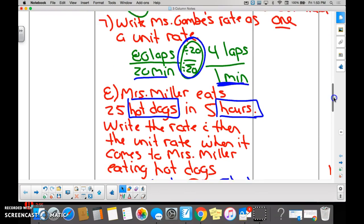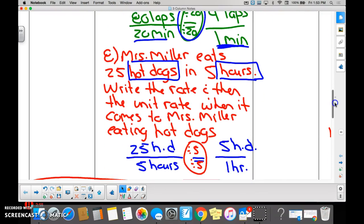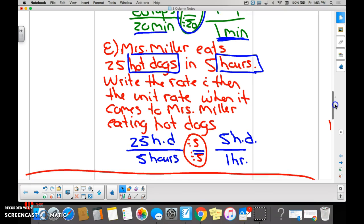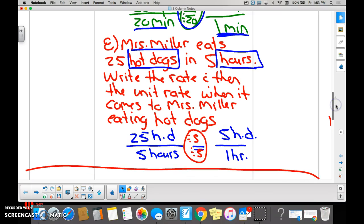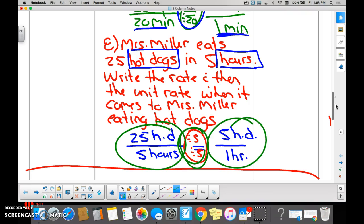Last thing. Miss Miller. She eats hot dogs. She ate 25 in five hours. So, we know that she can eat 25 hot dogs in five hours. We want to write a unit rate. So, we have to reduce. And if you reduce by dividing by a common factor, we're going to get to that five hot dogs per one hour.